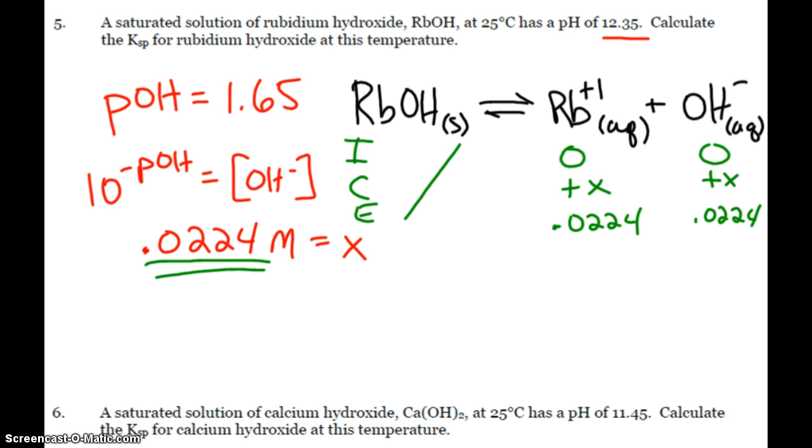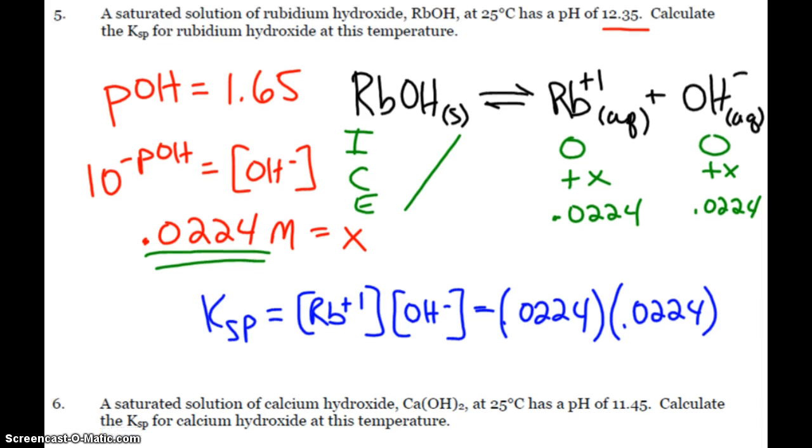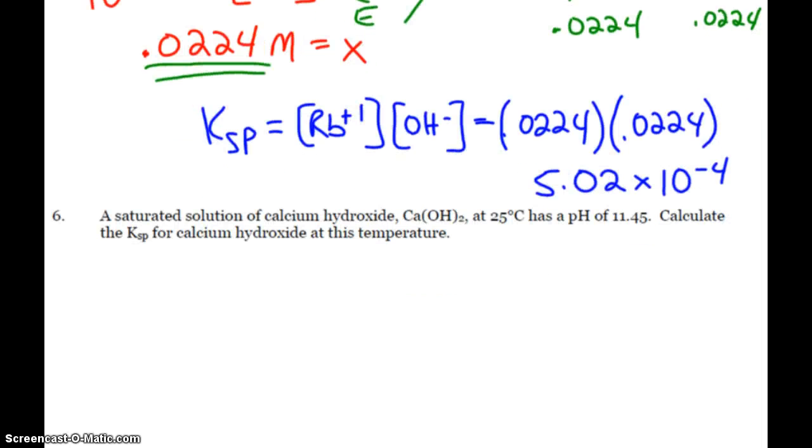And so now for my Ksp, I just have to take the concentration of rubidium times the concentration of hydroxide. They're both 0.0224. When I multiply those two numbers together, or square the 0.0224, I get 5.02 times 10 to the negative fourth. That's pretty straightforward because we have a 1 to 1 ion formation.